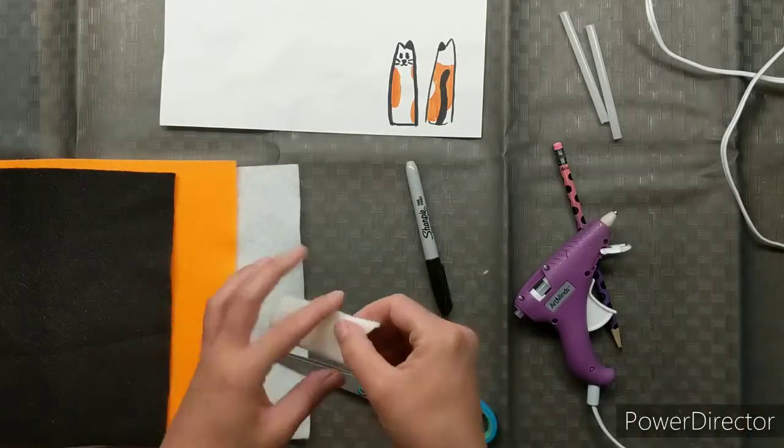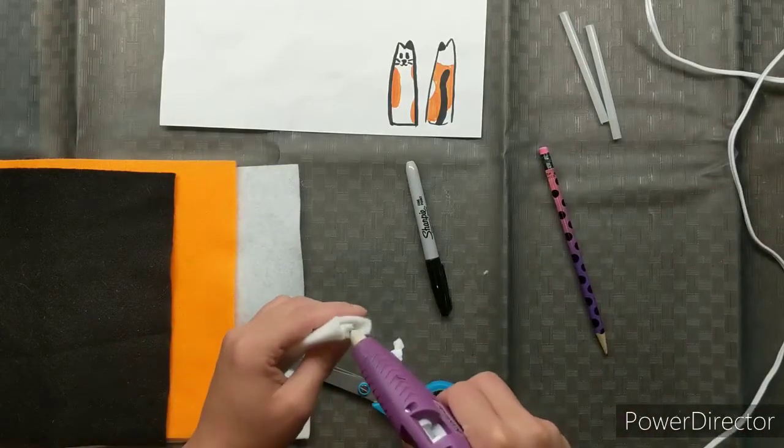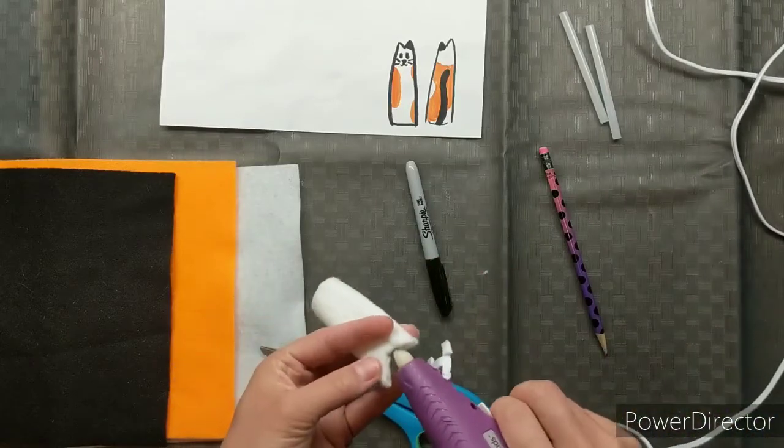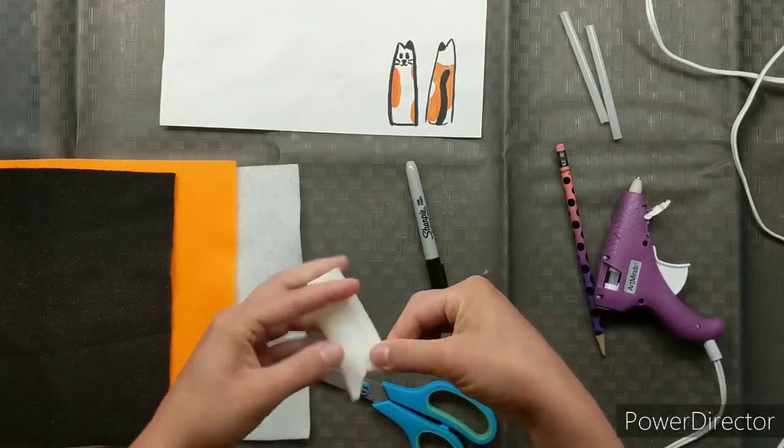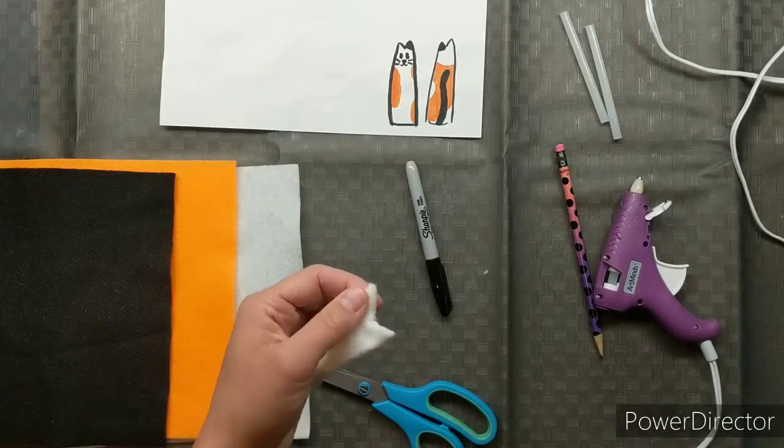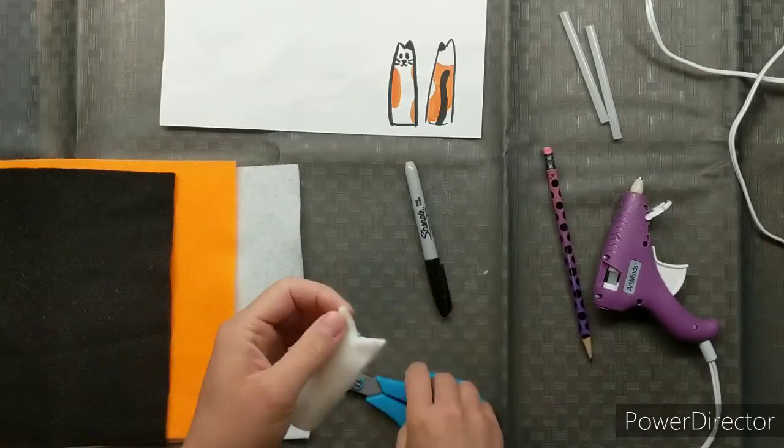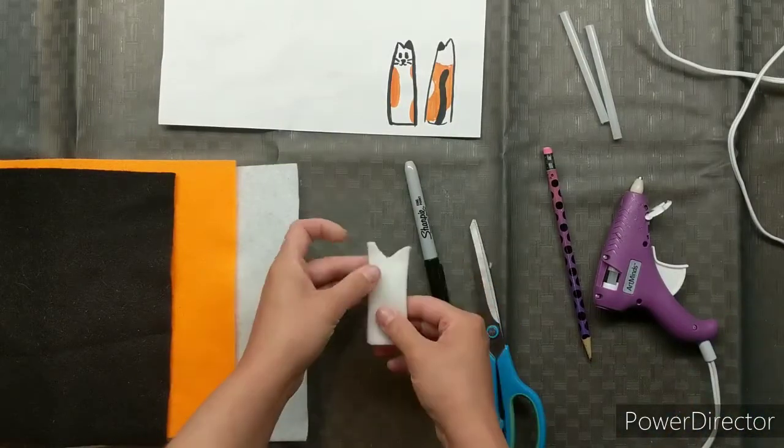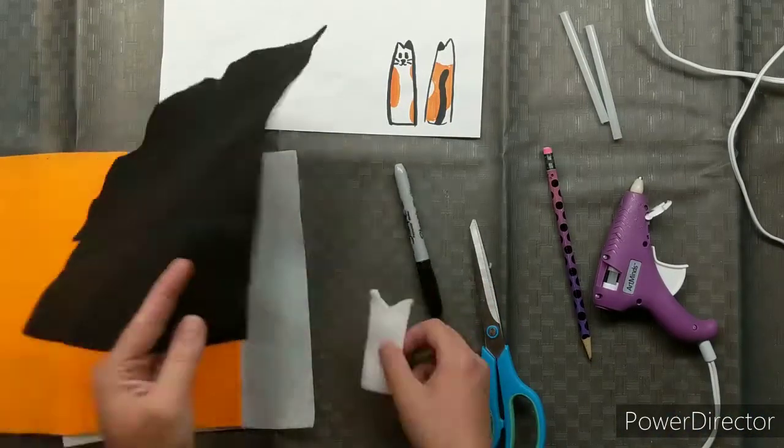Just inside the ears I'm putting a little bit of glue. You want to make sure that you don't add too much or get it too close to the edge because the glue will spill out. But while it's still warm you can still rub it off, at the mercy of burning your finger.